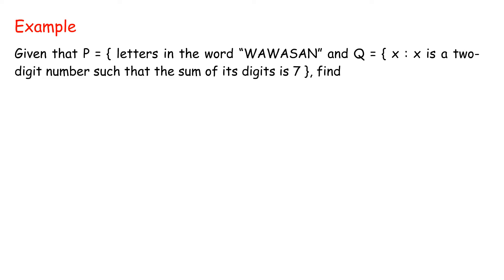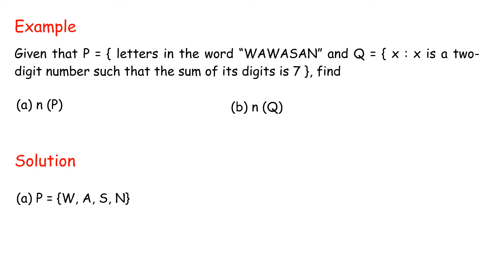Example: given that P = {letters in the word Wawasan} and Q = {x | x is a two-digit number such that the sum of its digits is 7}, find A: n(P), and B: n(Q). Solution A: P = {W, A, S, N}. Thus, n(P) = 4.